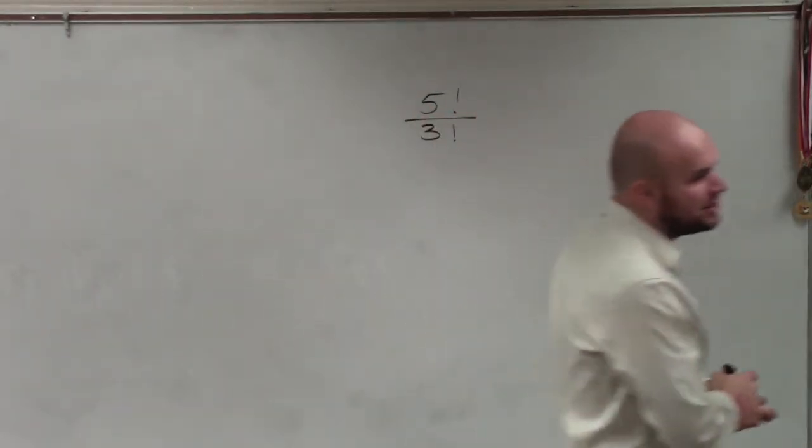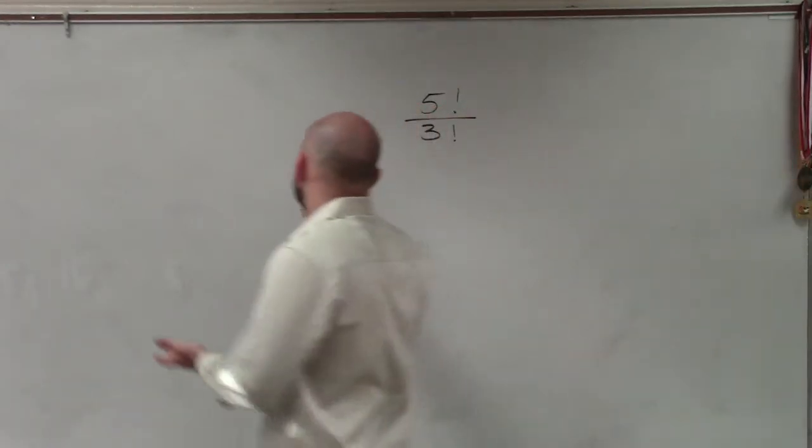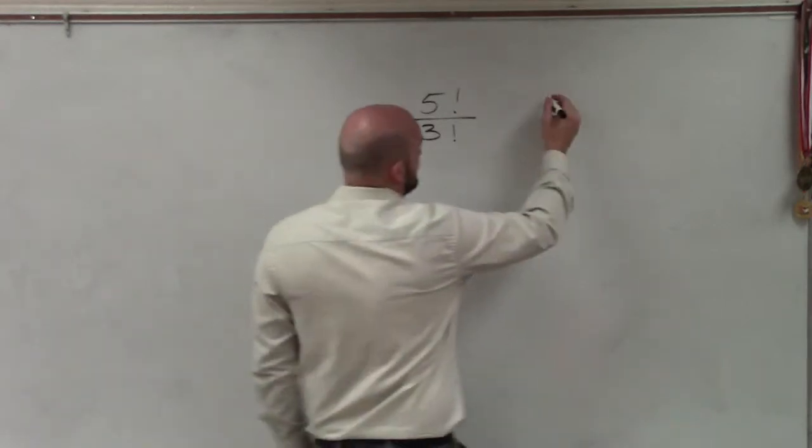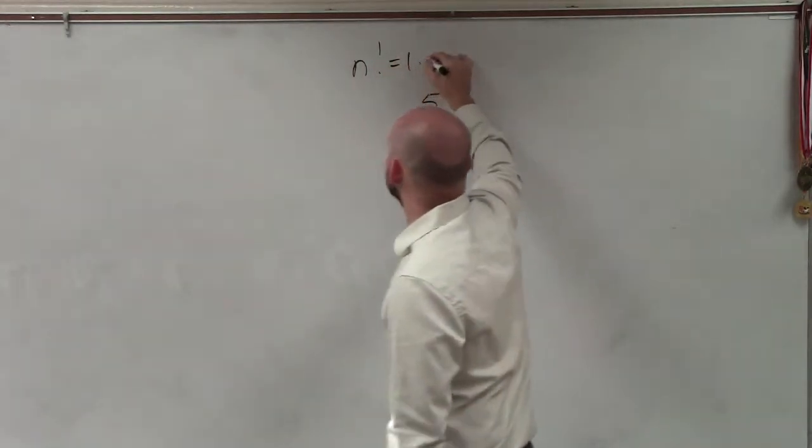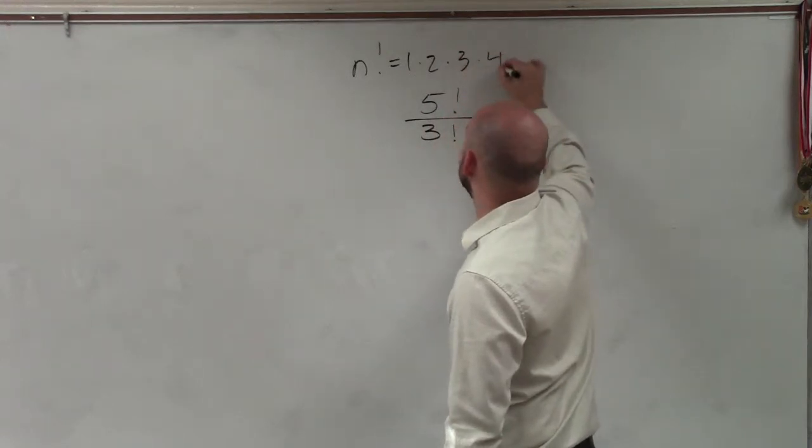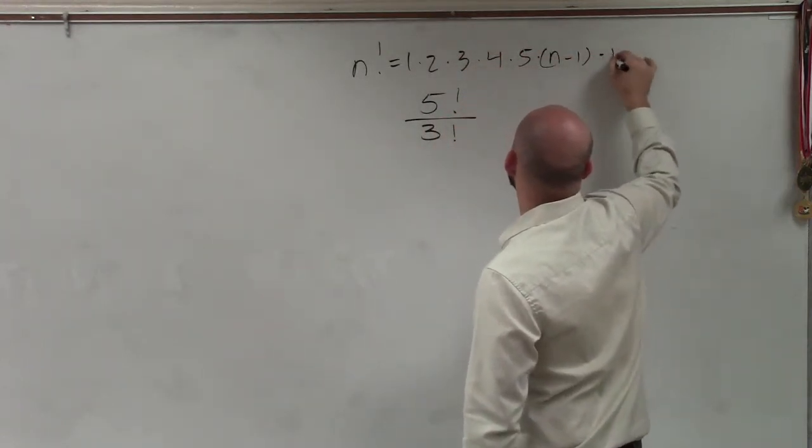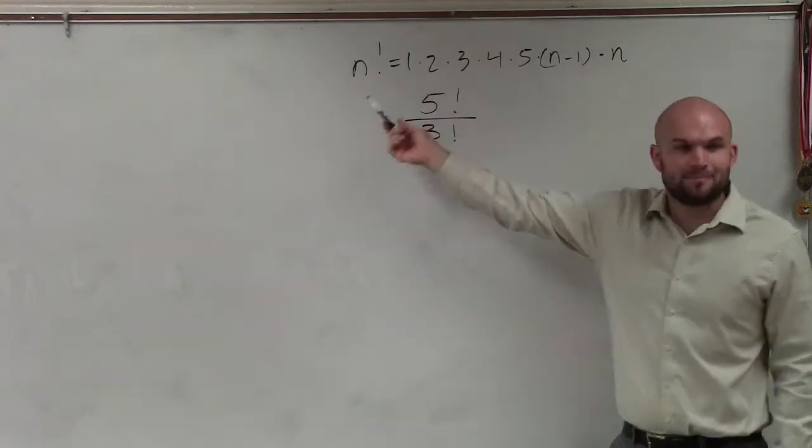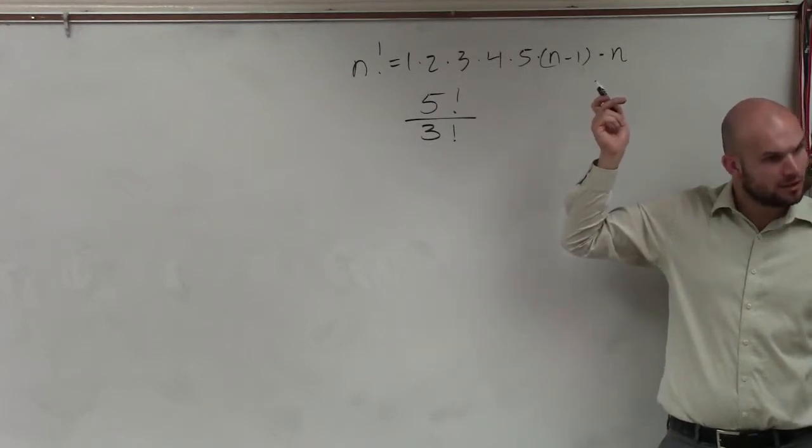Now the main important thing that I want you guys to understand when we're writing a factorial is, a factorial for any number, if let's say I have n factorial, what that means is 1 times 2 times 3 times 4 times 5 times n minus 1 times n. So what you do is you keep on multiplying from 1 all the way up until you get to n.